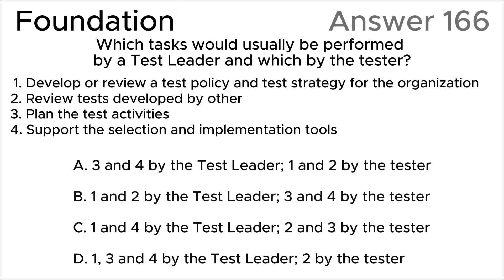Let's look at all the statements from 1 to 4 according to the ISTQB syllabus. Statement 1: Develop or review a test policy and test strategy for the organization is a task of test management as a test planning activity. This task requires strategic decision making and alignment with organizational goals, making it suitable for the test leader who oversees the overall testing process. Statement 2: Review tests developed by others is a task of a tester as a test design activity. Testers typically develop and review tests of other testers as part of their responsibilities.